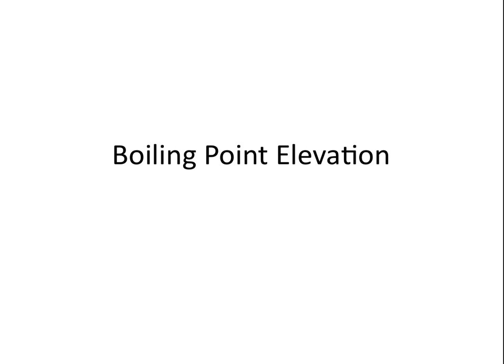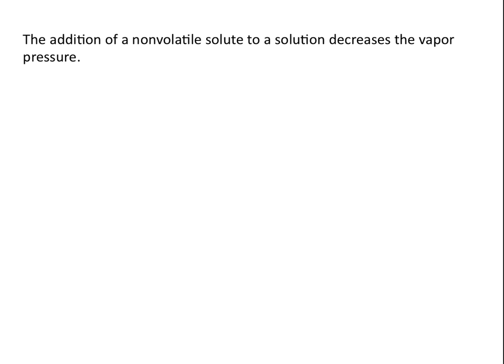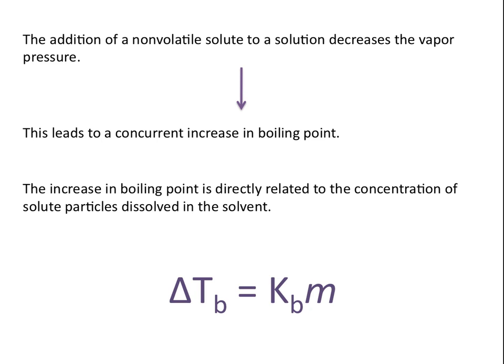Hello and welcome to the Chemistry Solution. This tutorial is on boiling point elevation. The addition of a non-volatile solute to a solution decreases the vapor pressure, which leads to a concurrent increase in boiling point. The increase in boiling point is directly related to the concentration of solute particles dissolved in the solvent.